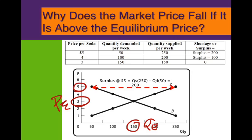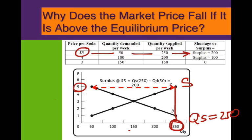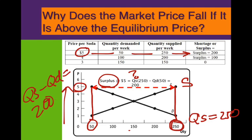At $5, you draw a line straight down and you get a quantity supplied of 250. But since the price is going up, the law of demand kicks in, and the quantity demanded is only 50. How much of a surplus do we have? It's quantity supplied minus quantity demanded: 250 minus 50 equals a surplus of 200.